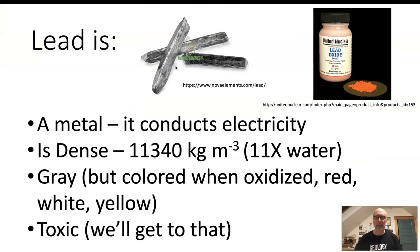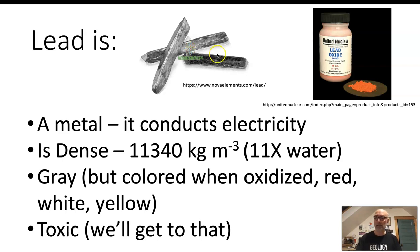So what is lead? Lead's a metal — a silvery gray metal. It conducts electricity because it's a metal. It's very, very dense, about 11 times the density of water, so you'd have a really hard time picking up a gallon's worth of lead. Typically gray to silver, but when oxidized — when combined with oxygen — it can be red, white, or yellow. Up here is some red lead oxide powder, bright red. Lead is also toxic, but we'll get to that — that's not for today.